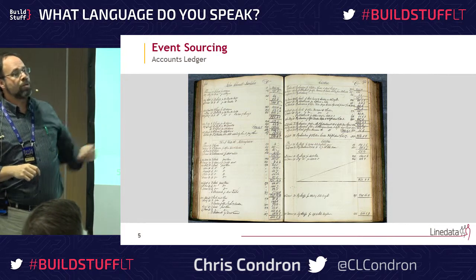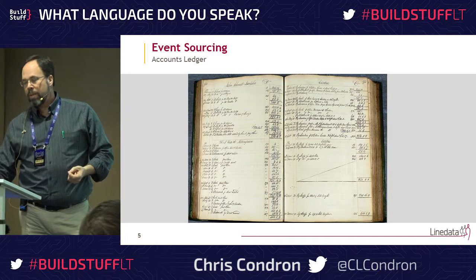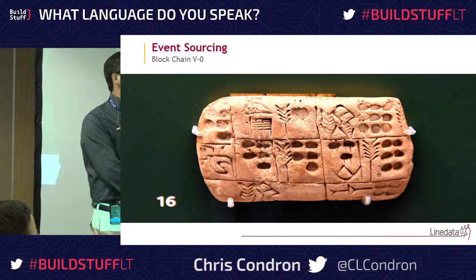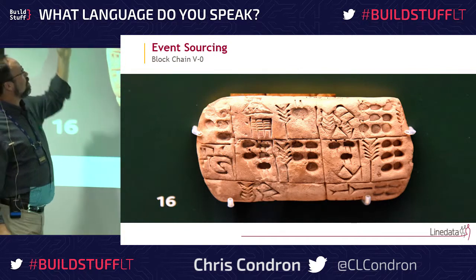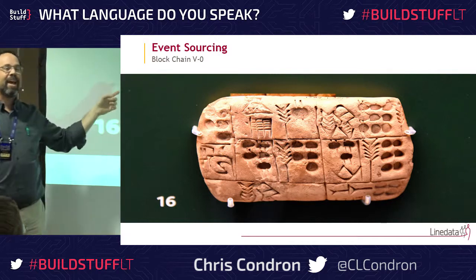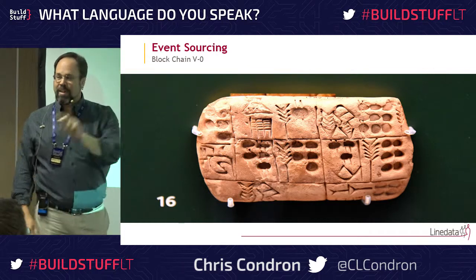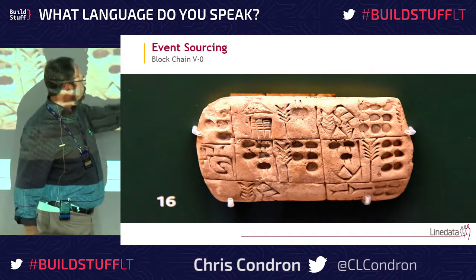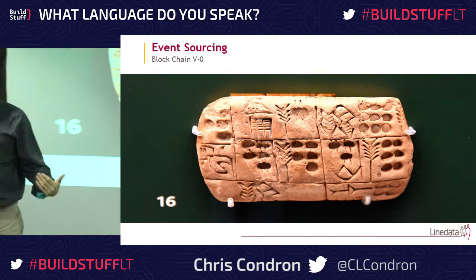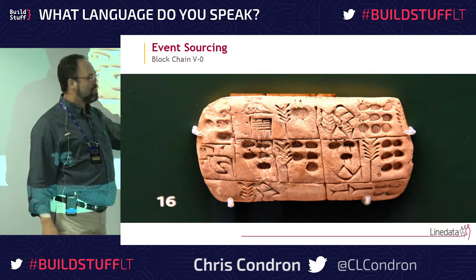I've got a complete audit log and something which is striving to be distributed and always reconcilable. The other thing we want is long-term durability and immutability — this is what I call blockchain version zero. This is a Mesopotamian grain audit in clay from 7,000 years ago. It's write-once media. 7,000 years later, I can still tell that six urns of barley were delivered to the warehouse. We can still read this event today.